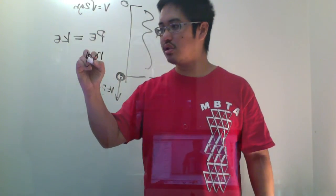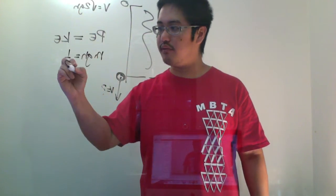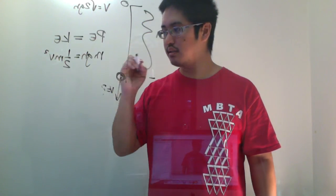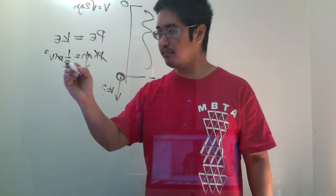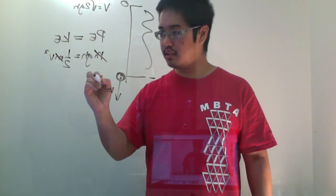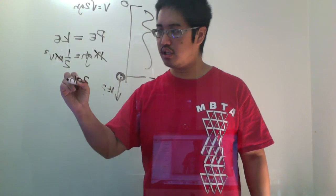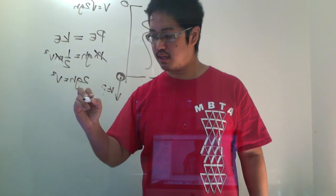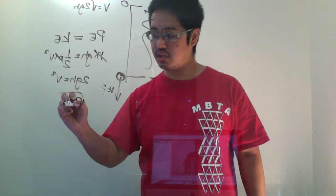Potential energy is mgh. Kinetic energy is one half mv squared. I want to solve for v, figure out what that is. m cancels with m. Multiply this up by 2. So 2gh equals v squared. Square root of both sides. Square root of 2gh equals v.